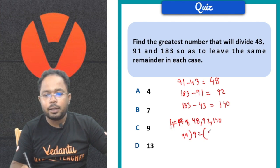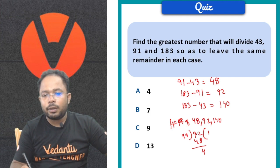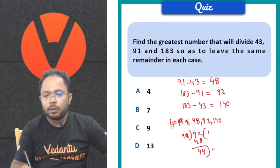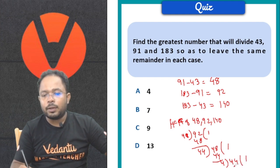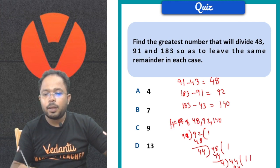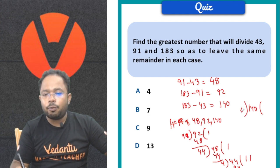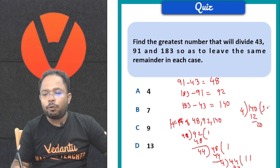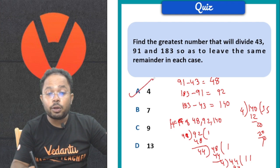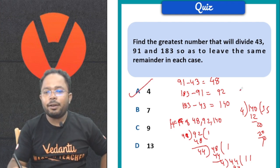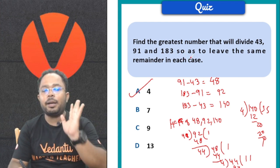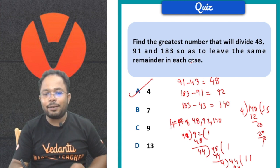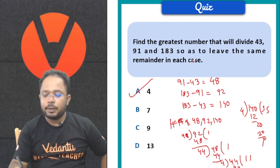Using long division method: 48 divides into 92 once with remainder 44. Then 48 divides into 44... continuing this process, we get 4. Then 4 divides into 140 to give quotient 35 with no remainder. Therefore, we are getting 4 as the highest number which will divide 43, 91, and 183 leaving the same remainder in each case.